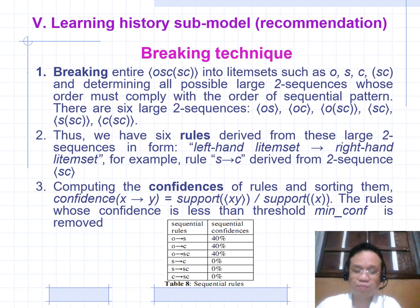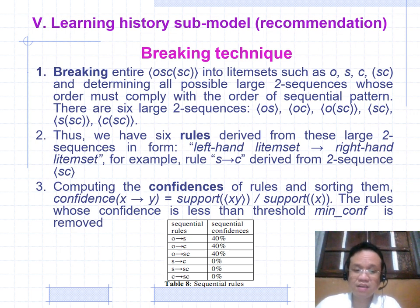Table A shows 7 rules with their confidence values: OS — 40%, OC — 40%, OSC — 40%, SC — 0%, SSC — 0%, CSC — 0%.